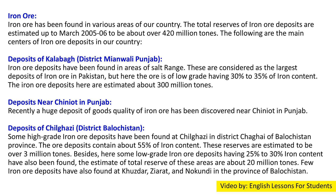Deposits of Kalabagh, District Mianwali, Punjab: Iron ore deposits have been found in areas of the Salt Range. These are considered the largest deposits of iron ore in Pakistan, but the ore is of low grade, having 30% to 35% iron content. The iron ore deposits here are estimated at about 300 million tons.